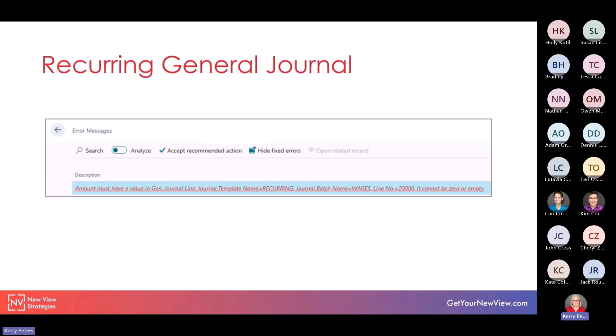Previously, options might be to just delete that line and then add it back for the next time you might need to post that journal. Or you could filter that zero dollar line out of view, post the recurring journal, remove the filter, and then make sure that you checked and updated the date on that line that had been removed so that it matched all of the other lines.